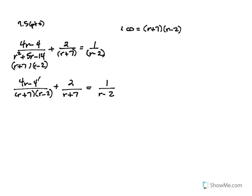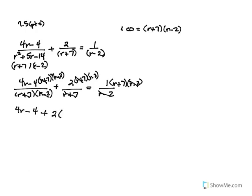Then we multiply every term by the LCD, because our goal is to get rid of these denominators. The R plus 7s cancel each other out, and the R minus 2s cancel. My first fraction just leaves me with 4R minus 4. In the second fraction, the R plus 7s cancel, and the 2 stays and is multiplied times R minus 2. The R minus 2s cancel here and leave me with R plus 7.